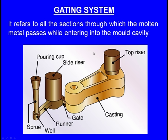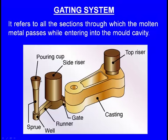Finally, the molten metal passes through the sprue, through the runner, fills the cavity, and rises through the riser. All the sections through which the molten metal passes while entering into the mould cavity is known as the gating system. Gating system includes the pouring cup, the sprue, the sprue well, the runner, the gate, and so on.